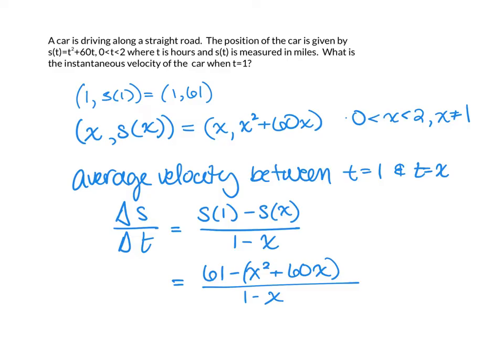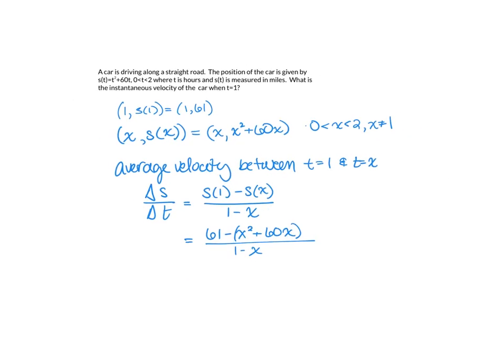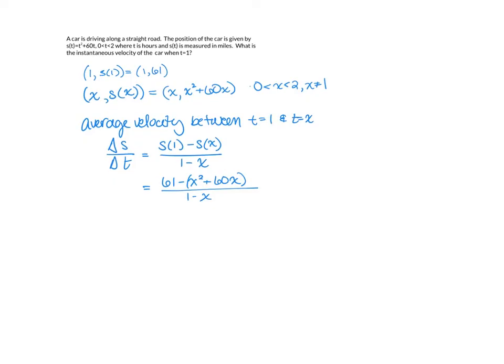But now we want to take a limit of this function as x approaches 1. So we're going to take a limit as x goes to 1 of 61 minus x squared plus 60x divided by 1 minus x. And we notice that this limit has a form of 0 over 0, and that means we need to do some algebra.